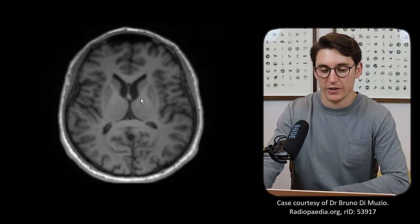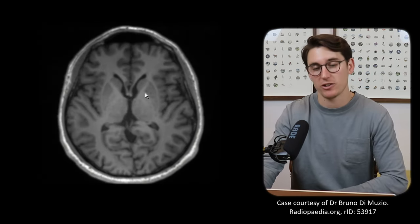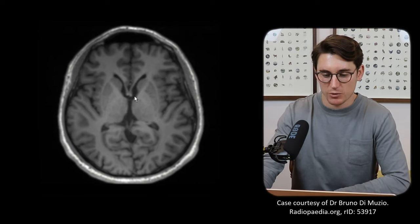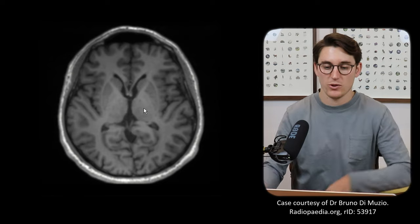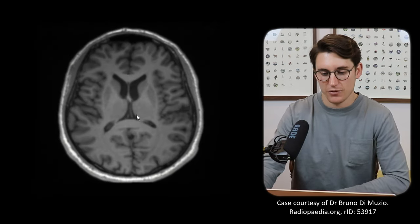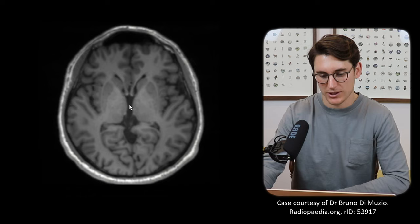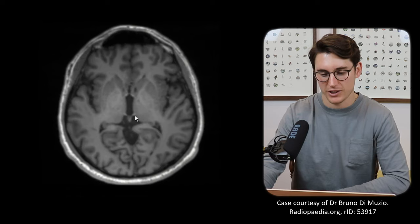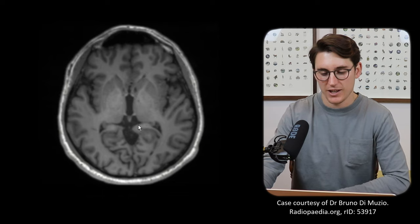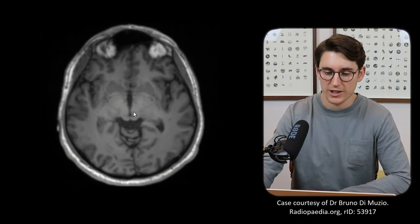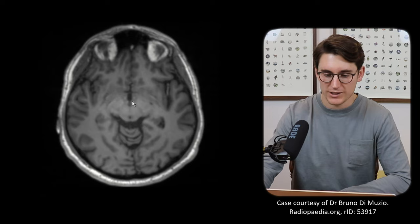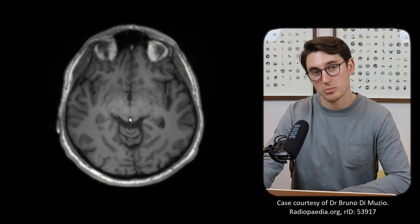So we've looked at our lateral ventricles — let's go have a look at our third ventricle. We can see our interventricular foramen coming down into our third ventricle, flanked by those two thalami. Let's head further down in the scan. We can see we're at the level of our third ventricle — here is our third ventricle, our thalami on the side. Let's follow the third ventricle down; we can see it narrows right down into the cerebral aqueduct.